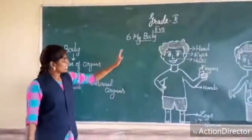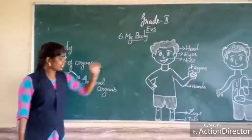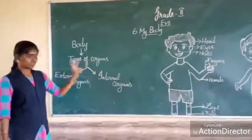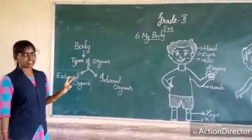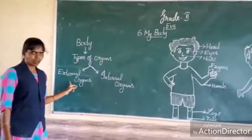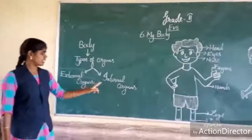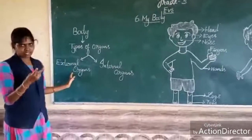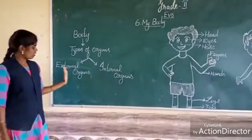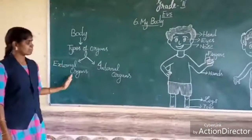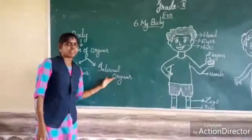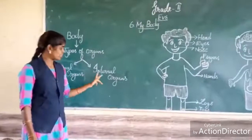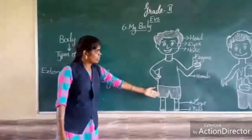Once again, listen. This is the seventh new class: My Body. How many types of organs do we have? Two types of organs. First one is external organs, second one is internal organs. External organs means we can see outside. Internal organs means we can't see outside.